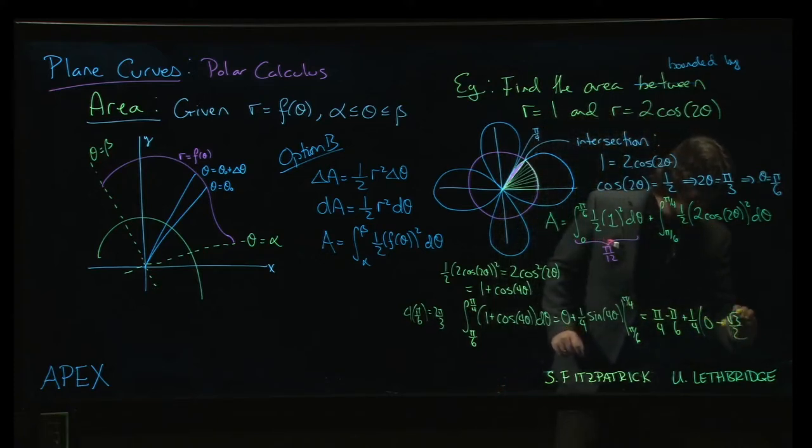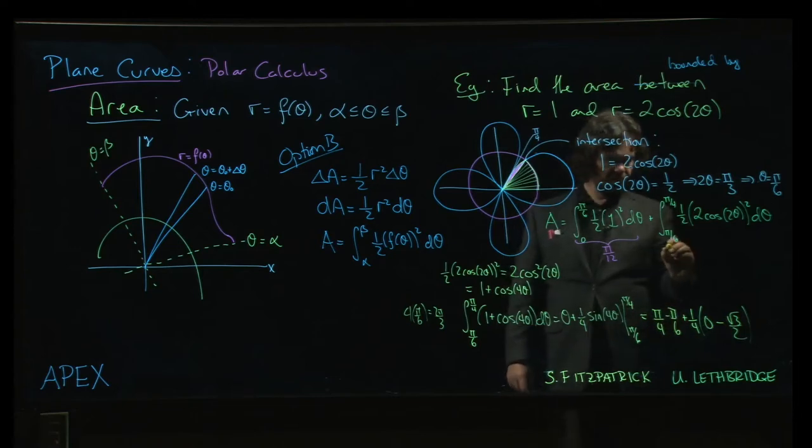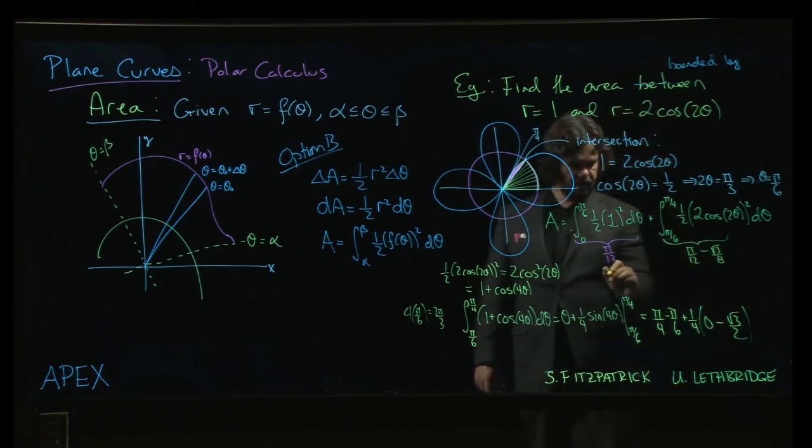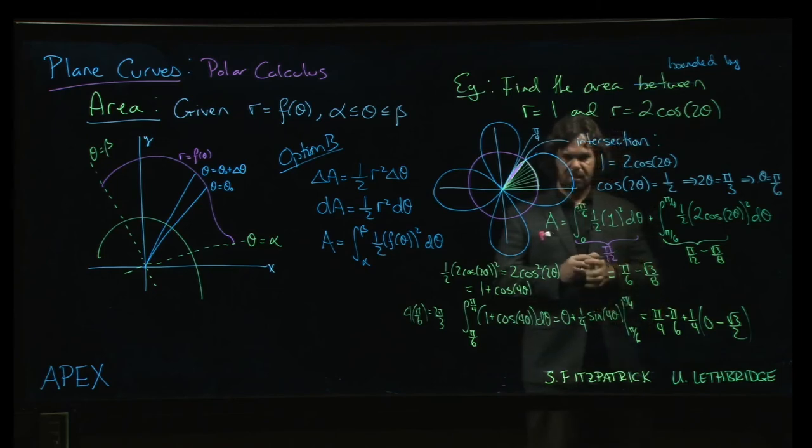So minus root 3 over 2. Better. So that's still pi over 12. So this is pi over 12 minus root 3 over 8, once I multiply the 4 in. And so now that is pi over 6 minus root 3 over 8. That's better. Okay.